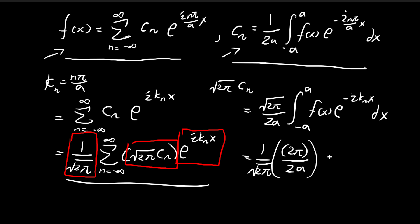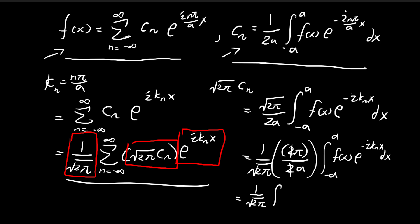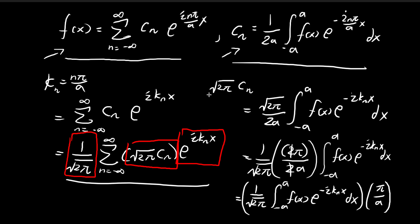We then divide by 2a, and the integral goes from negative a to a of f of x times e to the power of negative i k_n x dx. You can see the 2s cancel out, leaving 1 over the square root of 2 pi times the integral from negative a to a of f of x times e to the power of negative i k_n x dx, with the whole integral multiplied by pi divided by a. So the square root of 2 pi times c_n equals this entire term.